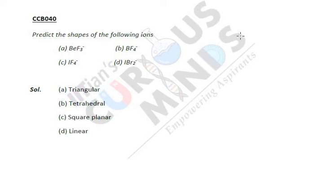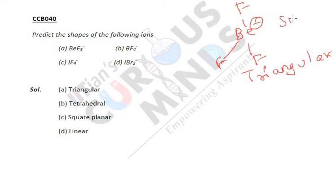First, let's see BeF3 minus. Beryllium has 2 bonds, but here it has 3 bonds with fluorine. So the shape will be trigonal planar, or you can say triangular. It has an extra electron, that's why it has 3 bonds. Now it has no lone pair. Its steric number is 3, so this is sp² hybridized. This is triangular or you can say triangle planar.